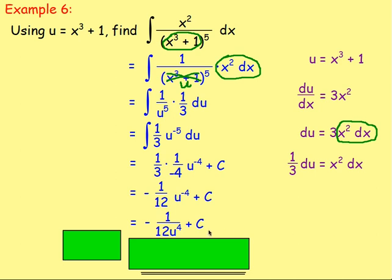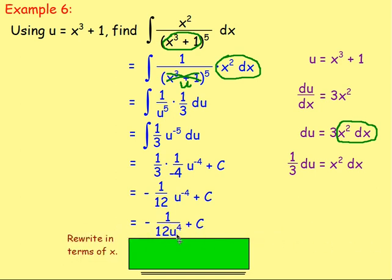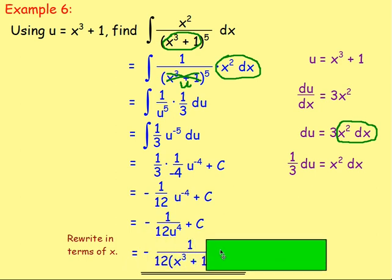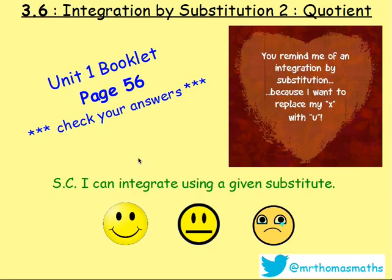And to finish off — what's the last thing that you would do, Fiona? Brilliant — you would rewrite that in terms of x. So u is equal to x cubed plus 1, giving negative 1 over 12(x cubed plus 1) to the power of 4, plus c. And that's your answer. There are some more examples with integration by substitution when you are dividing one function by another. Try these questions in the book on page 56. Give them a shot, see how you get on, and make sure you are okay before you move on to the next lesson. Best of luck!